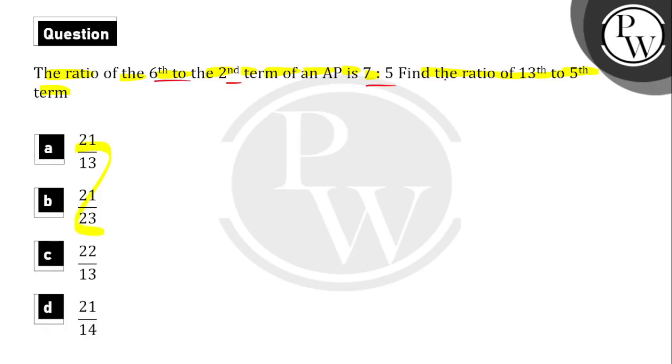The ratio given is 7 is to 5. We need to find the 13th to 5th term ratio. Given that A6 upon A2 is equal to 7 upon 5.